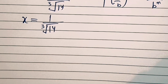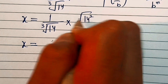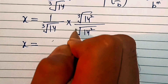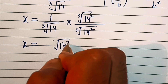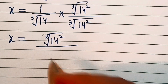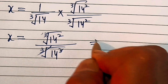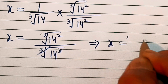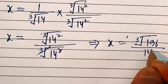Now we will rationalize the denominator. For that, we will multiply the numerator and denominator by the cube root of 14 squared. This gives x equal to the cube root of 14 squared, divided by the cube root of 14 multiplied by the cube root of 14 squared, which is the cube root of 14 cubed, which equals 14. So x equals the cube root of 196 divided by 14.